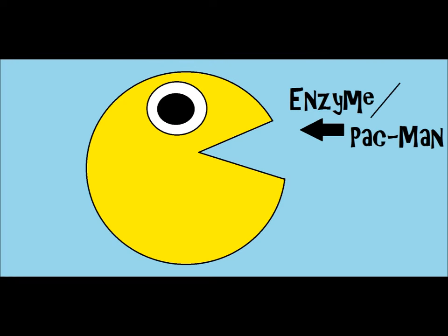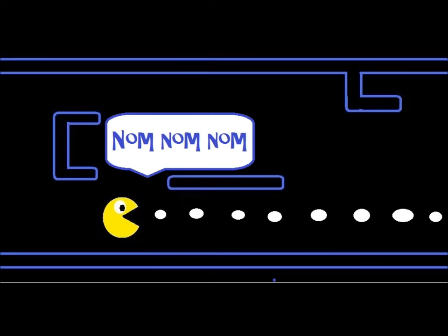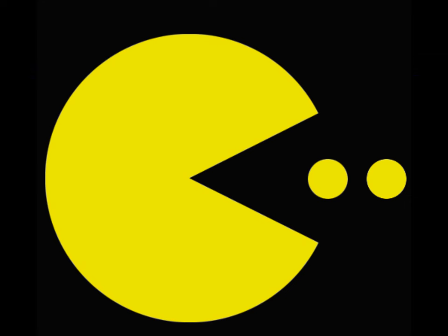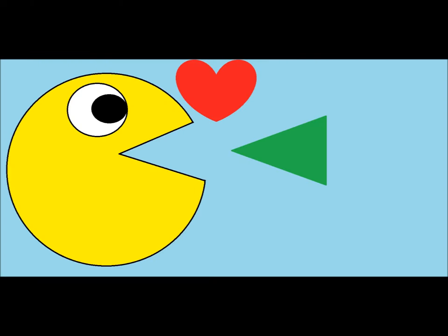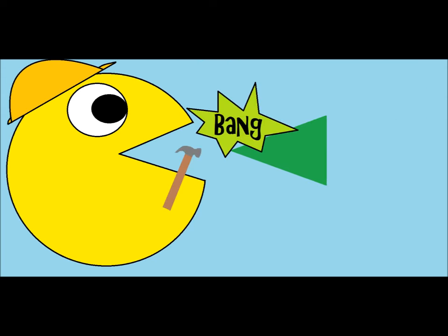Enzymes remind me of Pac-Man because they have a really specific shape. Pac-Man is this little guy that goes around with a mouth and eats little pebbles — it's kind of like a perfectly fitted mouth for the pebble he eats. Well, enzymes have a perfect shape for whatever they're going to fit into. That perfect shape is called a substrate. A substrate is something that the enzyme can either build up or break down.